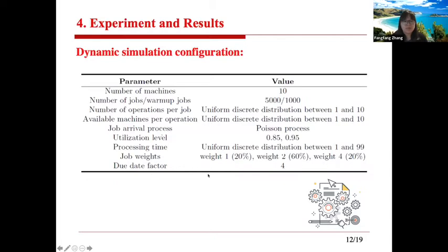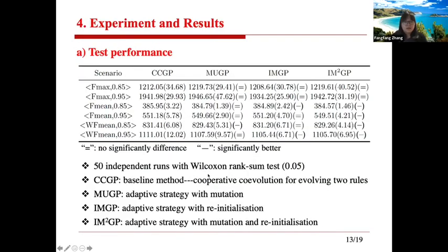Jobs also have a due date factor in the simulation. In our paper, we compare different algorithms: MUGP uses the adaptive strategy only in mutation, IMGP uses the adaptive strategy only for re-initialization of bad individuals, and the combined method uses both mutation and re-initialization. We find that when we use them together, we get the best performance. Using only mutation or only re-initialization individually also has some effect, but not as obvious as when they are combined.